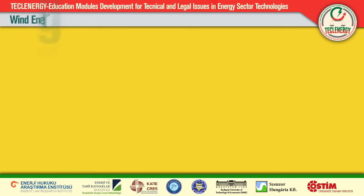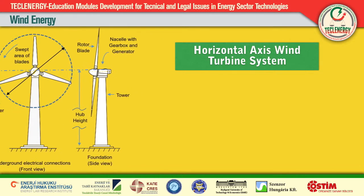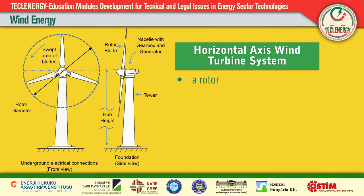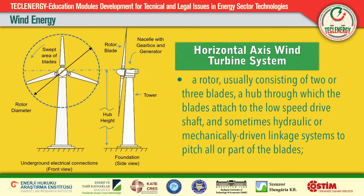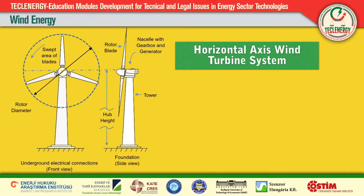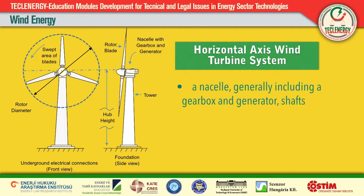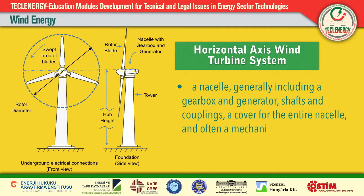A horizontal axis wind turbine system can be divided into four basic subsystems: the rotor, the nacelle, the tower, and the electrical controls and cabling. The rotor assembly may be placed either upwind of the tower — receiving wind unperturbed by the tower itself — or downwind of the tower, which enables self-alignment of the rotor with the wind direction but causes the wind to be deflected and made turbulent by the tower before arriving at the rotor.